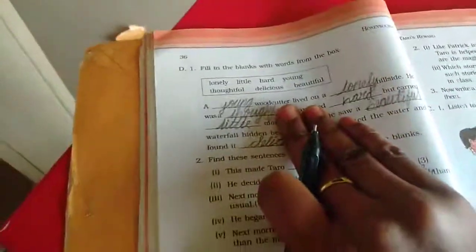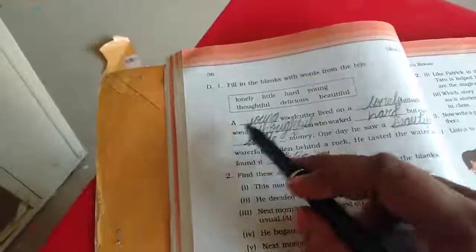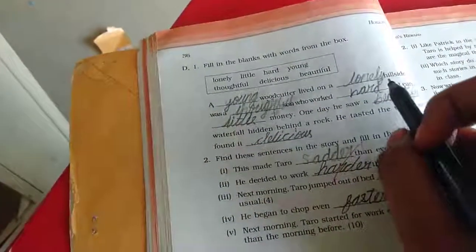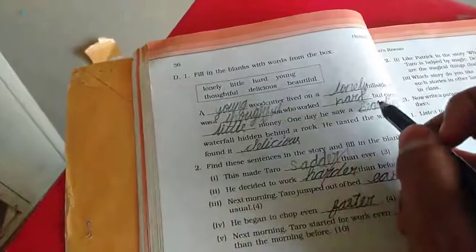C. Fill in the blanks with words from the box. Lonely. We will write the story here. Young Woodcutter lived on a lonely hillside. He was a thoughtful son who worked hard,